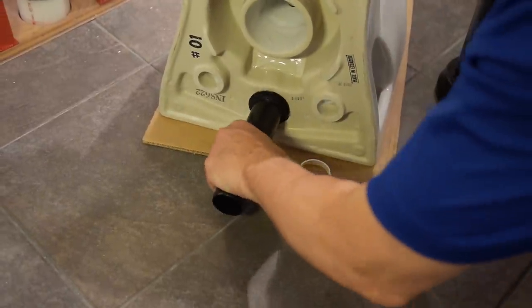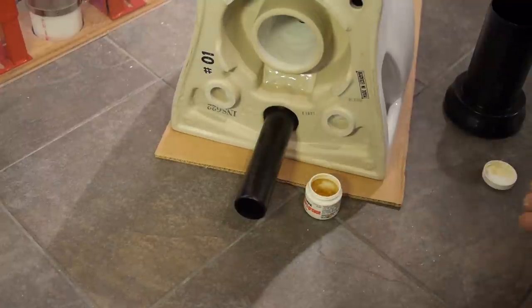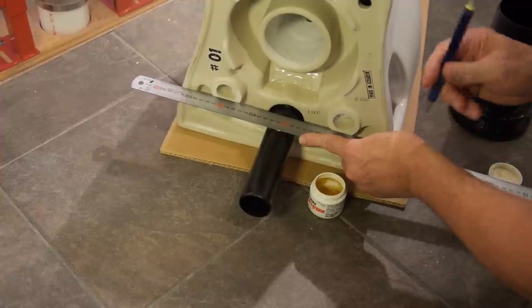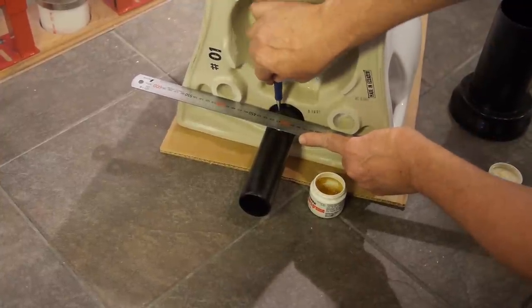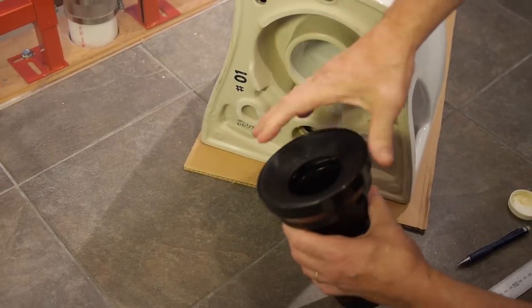Now put the inlet pipe into the back of the toilet bowl and using the straight edge, mark it and take it out. Repeat the same thing with the flange pipe.